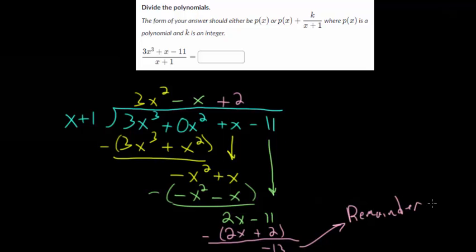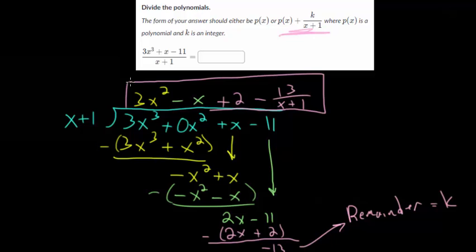So it is our k value in this expression up here. We have our polynomial plus our remainder divided by the original linear expression that we divided by. So it becomes plus, or actually in this case minus, because it's a negative number. So -13 over x + 1. And at this point, you could check this. Just multiply everything that we think is the answer by this x + 1, what we originally divided by, and you'll see that this will be the correct answer.